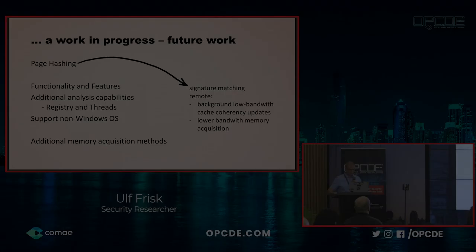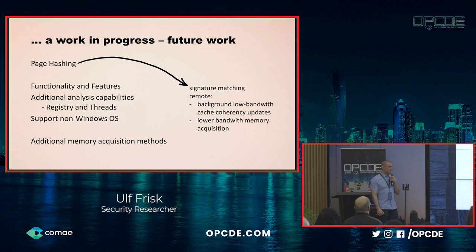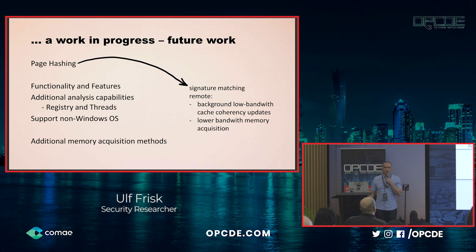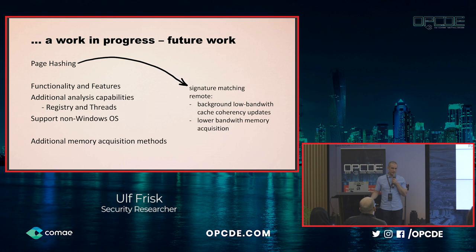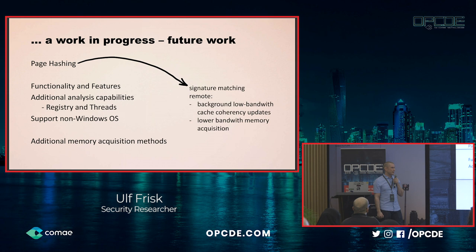The Memory Process File System is a work in progress with a lot of future work remaining. One thing I want to add quite soon is page hashing, which would allow me to reduce the amount of memory captured from remote systems and enable low-bandwidth cache coherency updates. I also wish to add a lot of functionality and features, with additional analysis capabilities — primary ones being support for the Windows registry and threading: analyzing threads of the target system. Support for non-Windows operating systems is certainly possible but requires a lot of work, so that's further in the future.